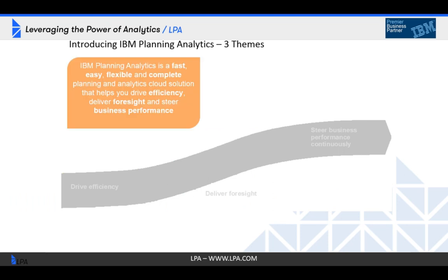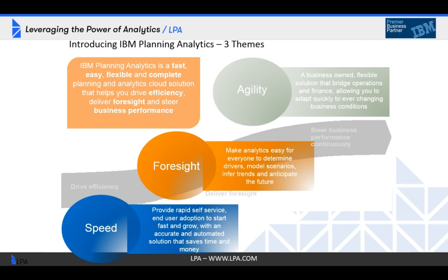Planning analytics was released in November of 2015 and it's based on three themes. First is speed — IBM wanted to create something with rapid self-service and high end-user adoption so somebody could jump in quickly and create reports and analyses. The second theme is foresight — giving somebody the ability to model scenarios, look at trends, and predict what the business will look like in the future. Lastly is agility — it had to be business-owned, flexible, and adapt quickly to changing business conditions.